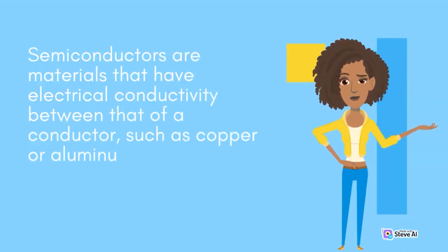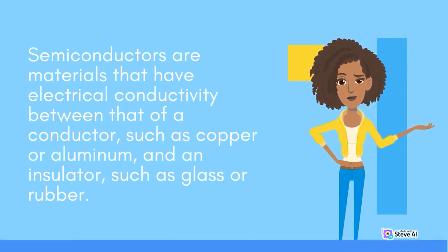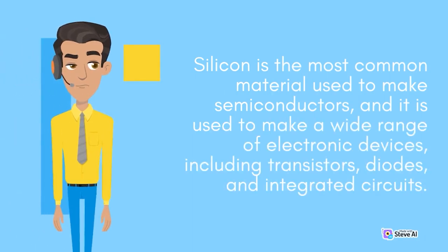Silicon is the most common material used to make semiconductors, and it is used to make a wide range of electronic devices, including transistors, diodes, and integrated circuits.